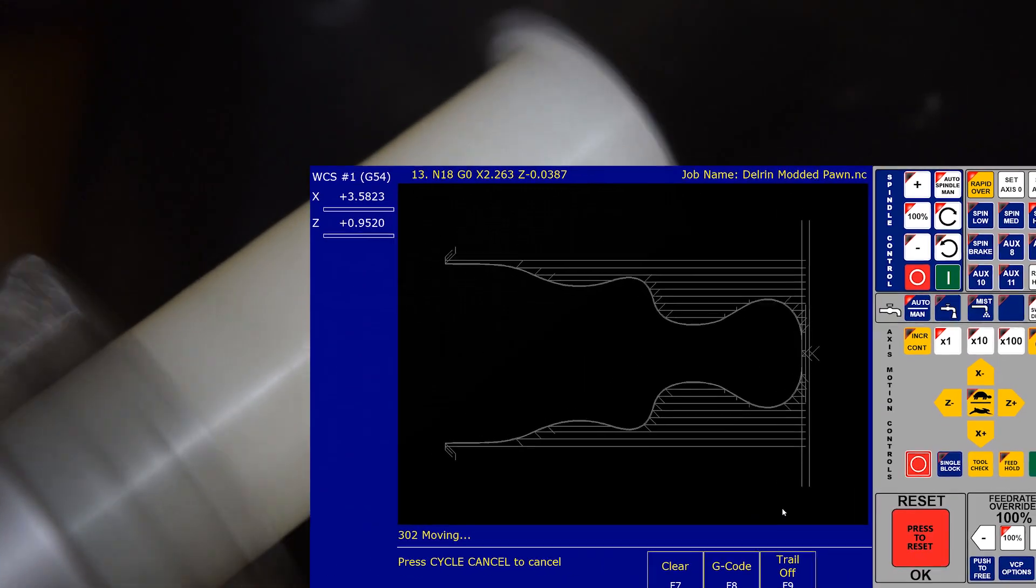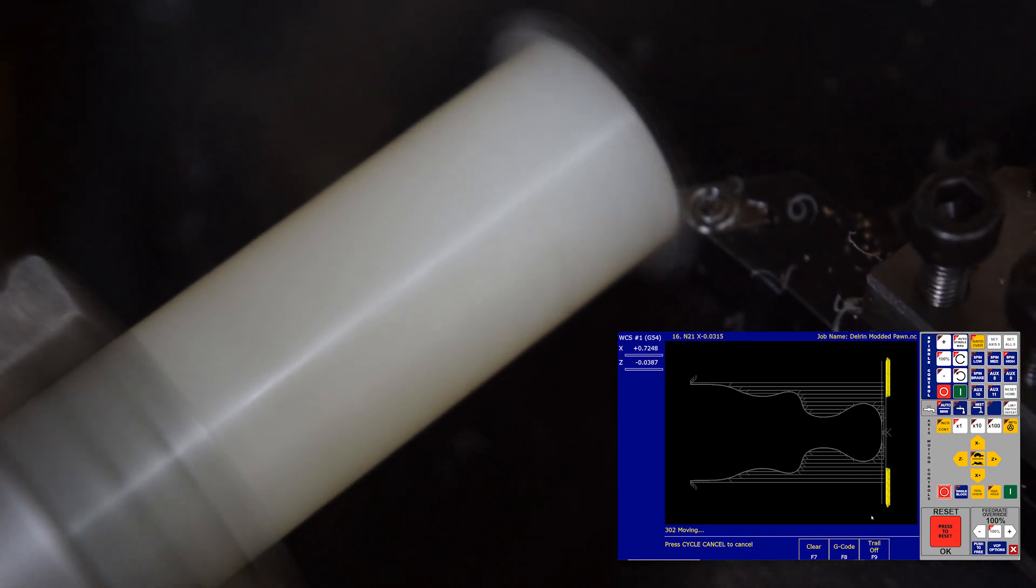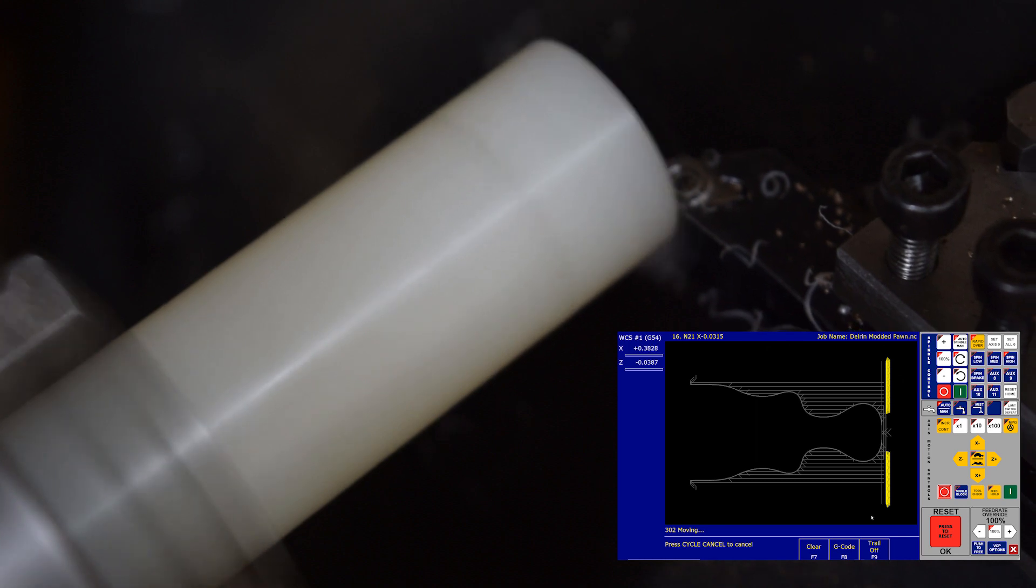For this demonstration, I'm just using a piece of Delrin. And the item we're turning is just a made-up shape in Fusion. It took me less than three minutes to make.